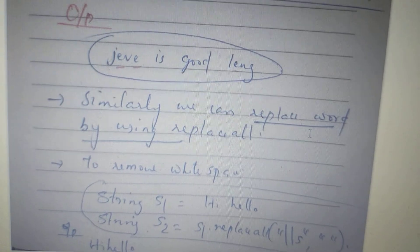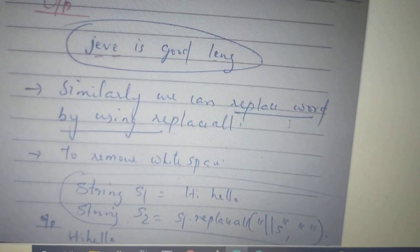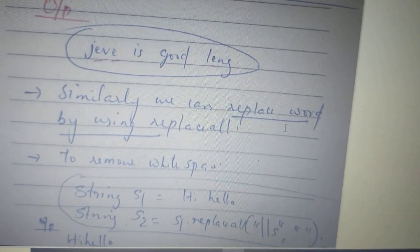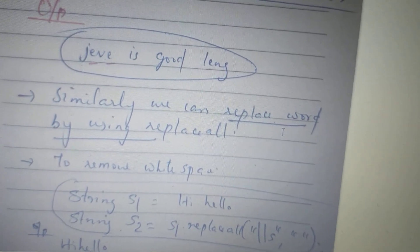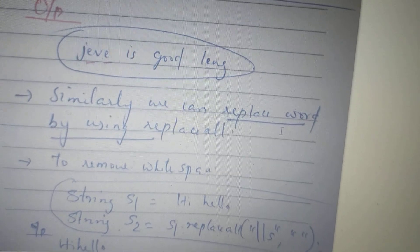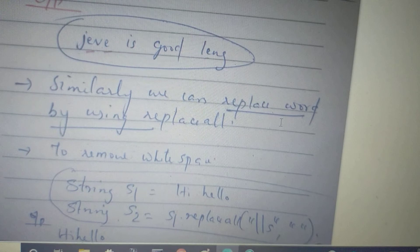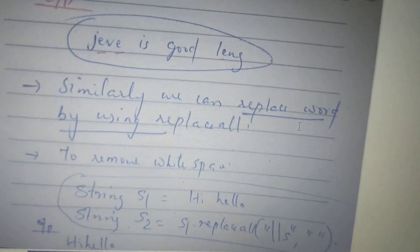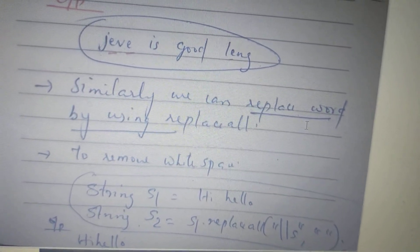If you want to replace all A with E, you can remove all occurrences in the string S1 using replaceAll. Here we use double slash S. If you want to replace all A with empty — double quotes empty — that means all the spaces will be removed. So if you have a space, you will have to remove it. Now check the space.